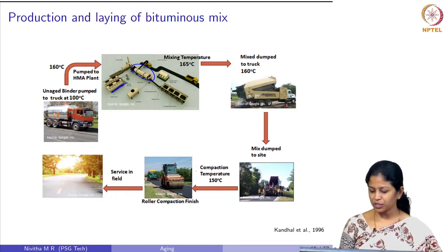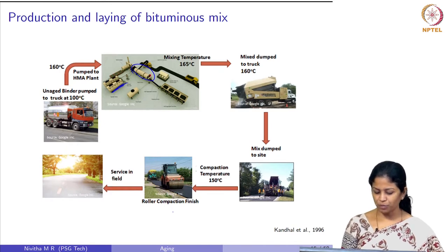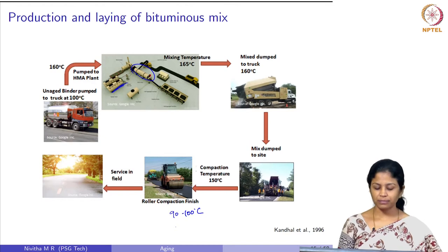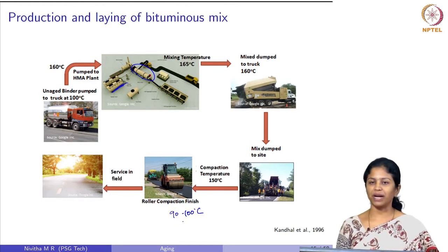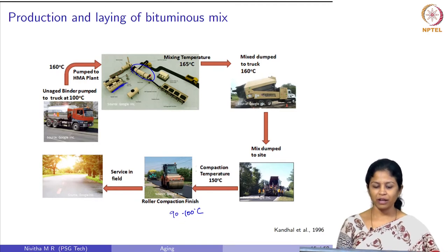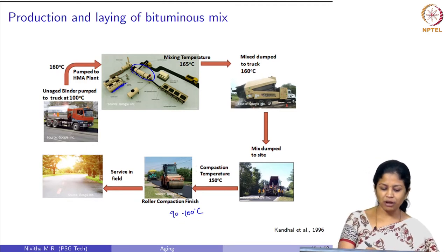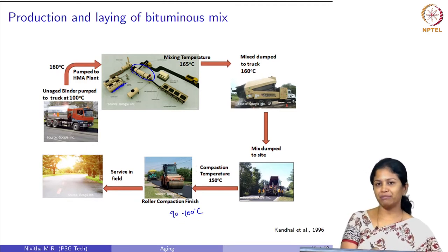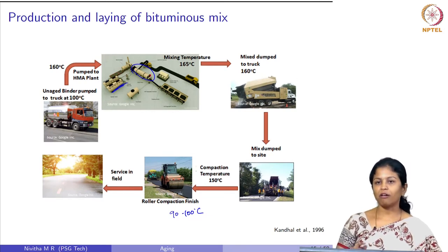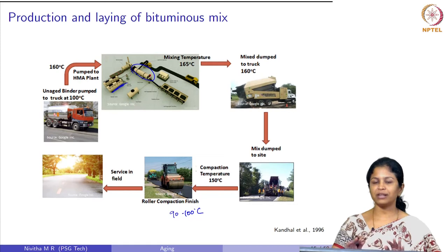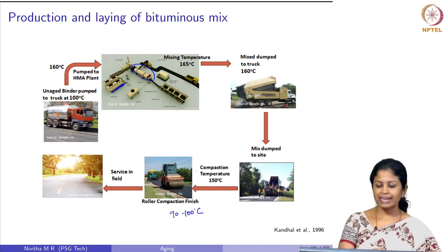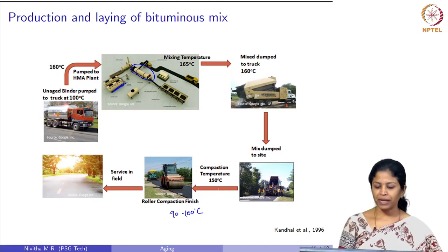When compaction is finished, the temperature should be roughly between 90 to 100 degrees Celsius. After compaction, the pavement is subjected to environmental conditions. In this process, from the point when bitumen leaves the refinery to when compaction is finished and pavement construction is completed, it experiences a number of heating and cooling cycles.